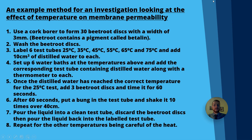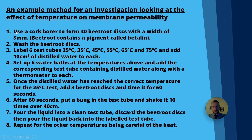I've simplified this method quite a bit from what I use with my own students, because as Einstein once said, if you can't explain something simply, you don't understand it well enough. So: use a cork borer to form 30 beetroot discs — the cork borer gives you a tube of beetroot which you then slice into discs three millimeters long using a ruler.